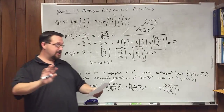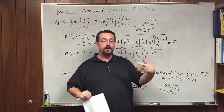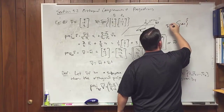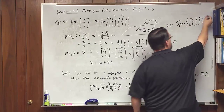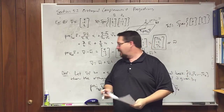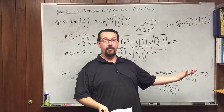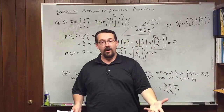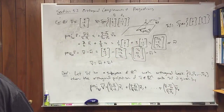That's everything for this lecture. Next we move to the Gram-Schmidt orthogonalization procedure. If W were the span of (1,2,1) and (0,0,2), those two vectors are not orthogonal, so we can't apply this projection theorem directly. What we want to do is replace those vectors with two orthogonal vectors whose span is the same space W — and that's what Section 5.3 is all about.